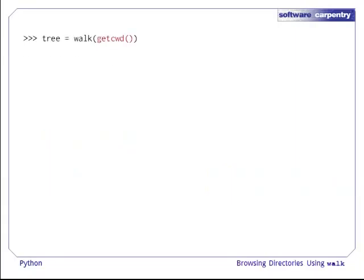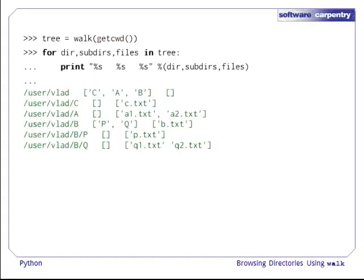So, if we use walk with getcwd to get the current working directory and print the results, we can see that the current working directory is the prefix.